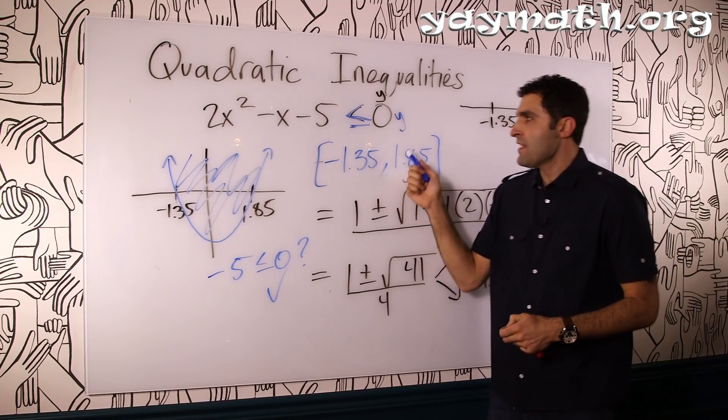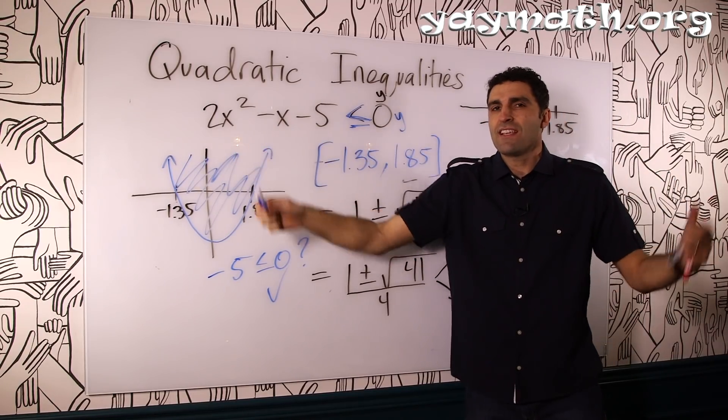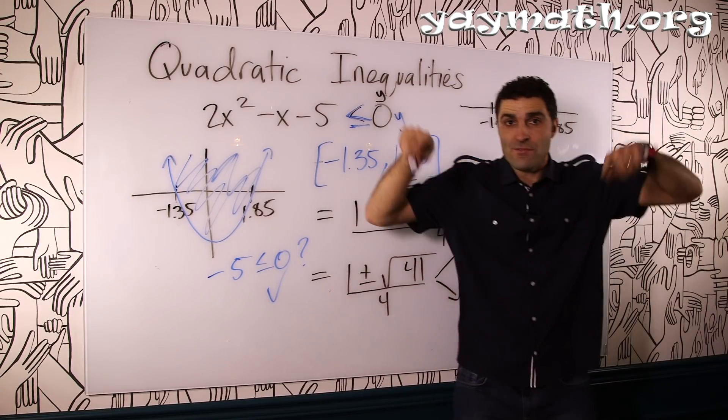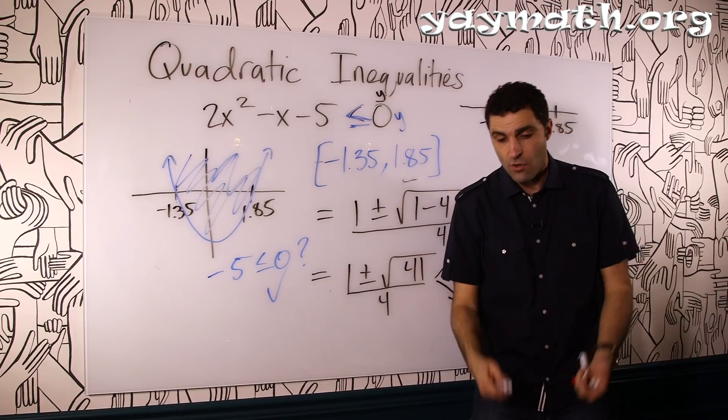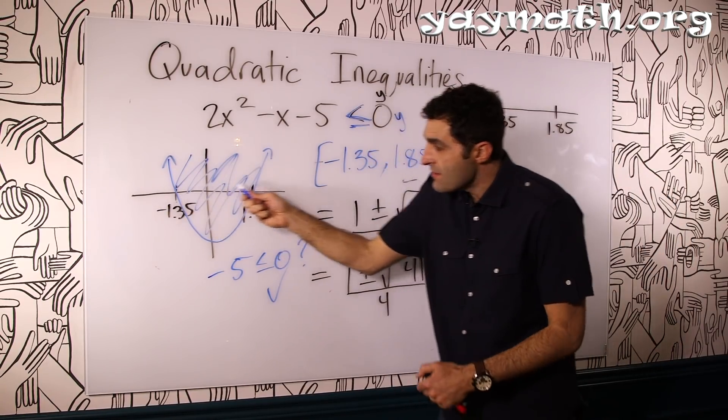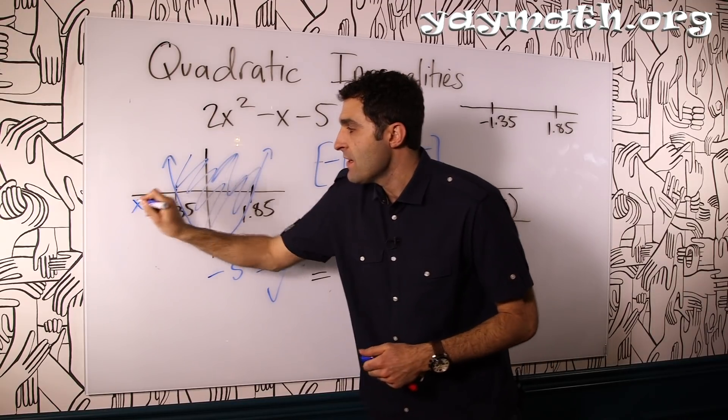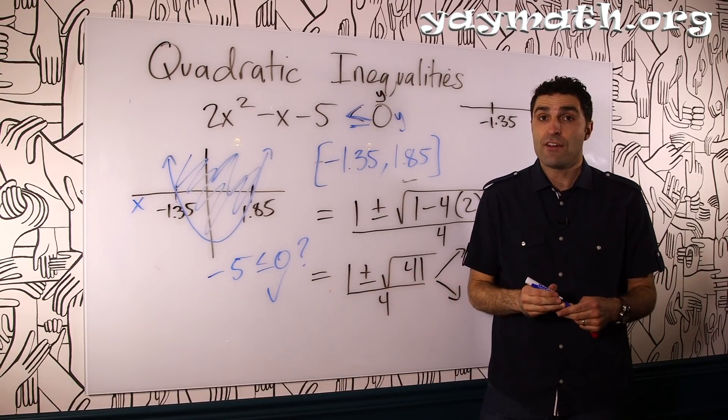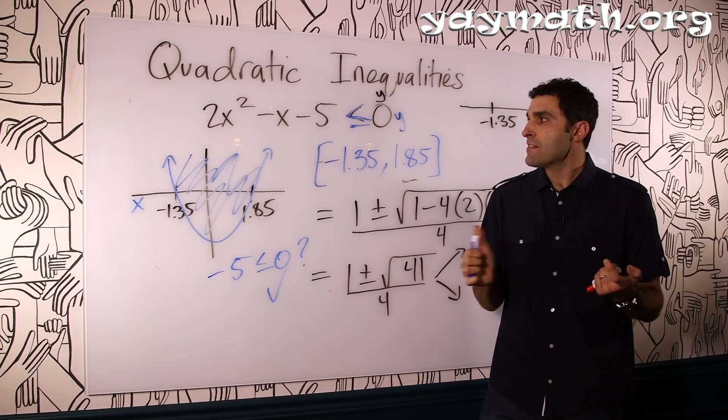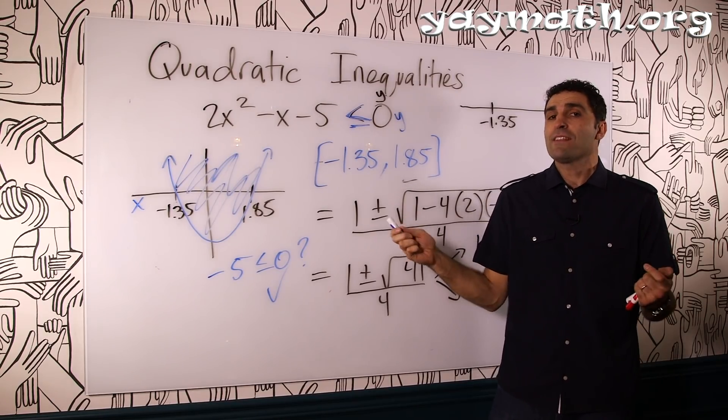So, don't be intimidated if you see something that can't factor. Just get the solutions other ways, like quadratic formula. And then understand where the parabola is, whether you're shading in or out, up or down. And then the solution set involves every x value therein. All right. That's it. That's the whole lesson. I hope you liked it. I hope it made sense to you.